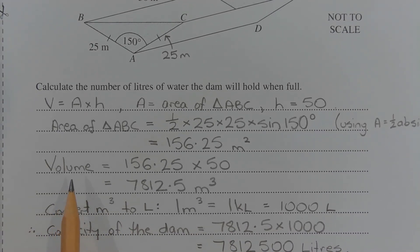So the volume of the triangular prism is 156.25, which is the area of the cross section, multiplied by the length, which is 50 metres. And that equals 7812.5 cubic metres.